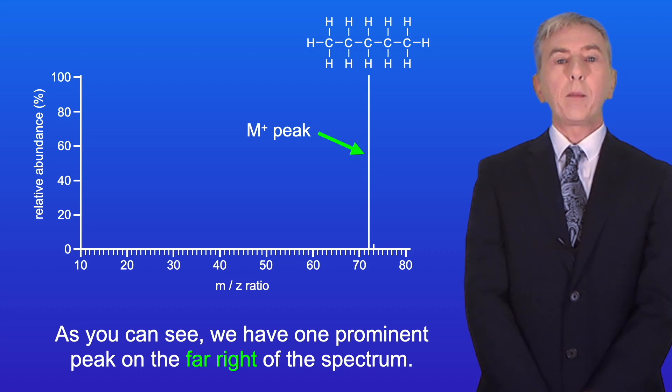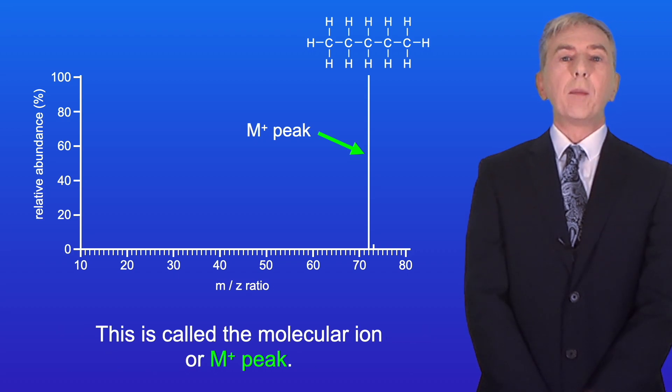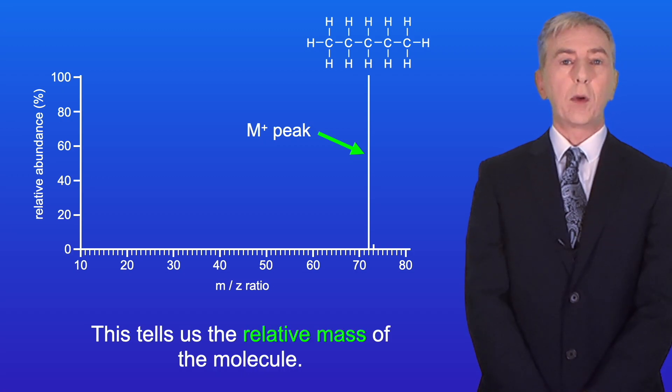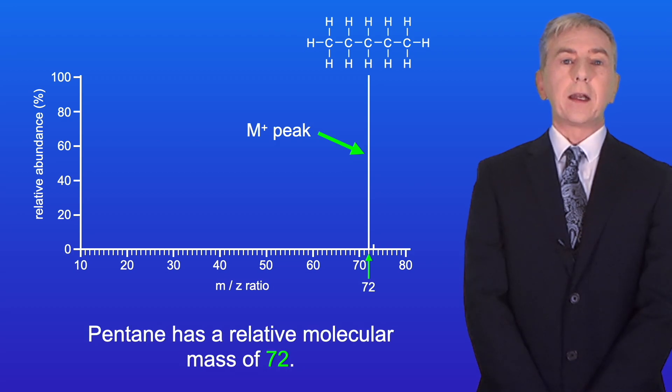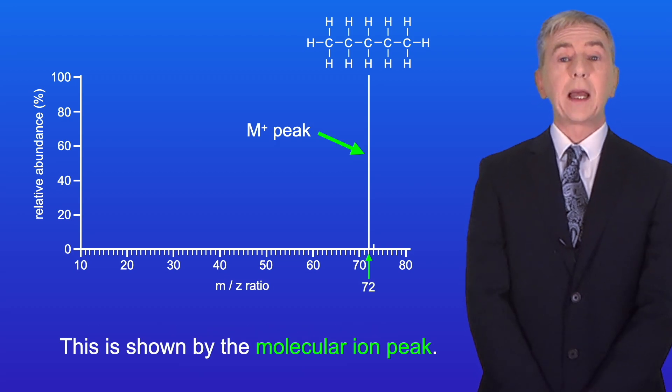As you can see we have one prominent peak on the far right of the spectrum. This is called the molecular ion or M+ peak and this tells us the relative mass of the molecule. Pentane has a relative molecular mass of 72 and this is shown by the molecular ion peak.